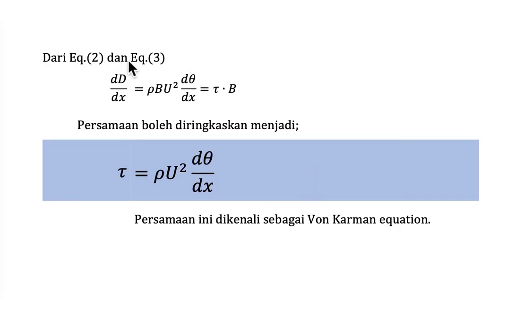From equation 2 and 3, we could equalize both of them and we could say that dd dx is rho B U square d theta dx equal to tau B. Then we can cancel out the value of B here. We could have tau is equal to rho U square d theta dx. This term is known as von Karman equation.